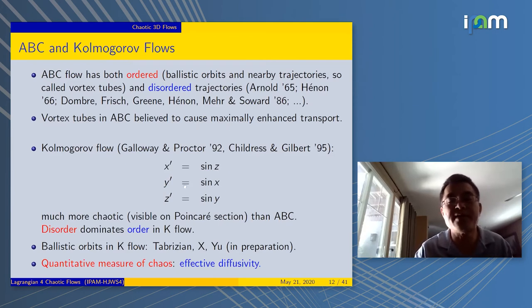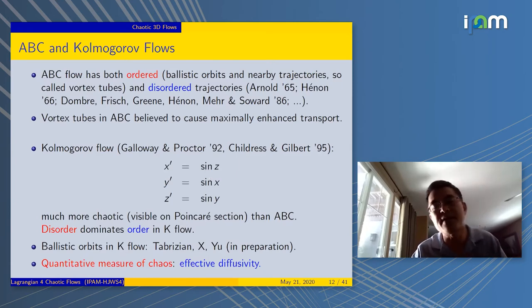So how do we measure the amount of chaos? You can draw pictures, but is there something quantitative you can say about chaos? There are certainly many such quantities in chaotic dynamical systems. But today we're going to look at one such quantity, which is called effective diffusivity.